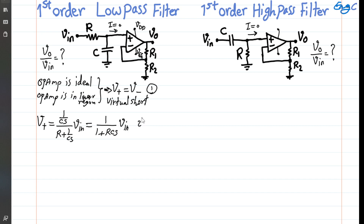Finally, since no current flows through the negative input terminal of the op-amp due to its infinite impedance, the voltage at the negative terminal is obtained by a voltage division between R1 and R2 from Vout. We can write: V-negative equals R2 over (R1 plus R2) times Vout. That is equation number three.